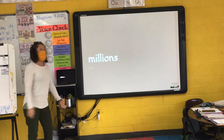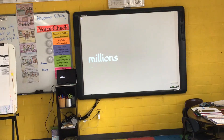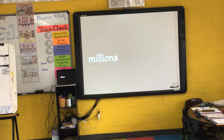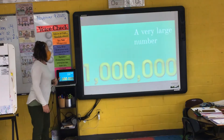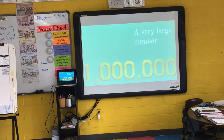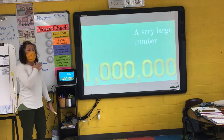Our next word is millions. I say it, you say it — millions. Let's clap the syllables in millions. Two syllables in millions. Raise your hand if you've heard the word millions before. Marina says: a lot. Millions is simply a large number. This is actually how you write the number — one million has six zeros behind it. We could have upwards of 999 million, and then the next number would go to billions. I say it, you say it — millions.